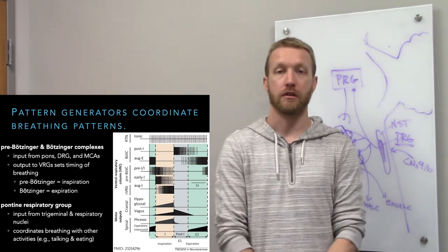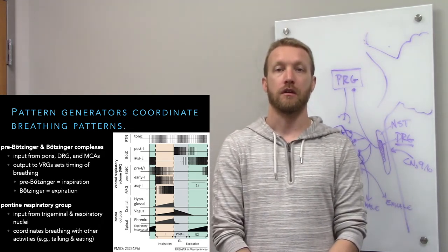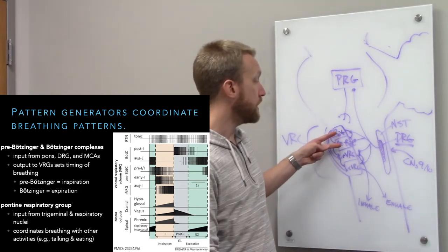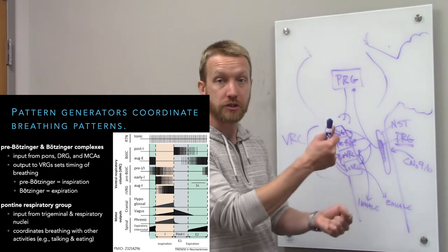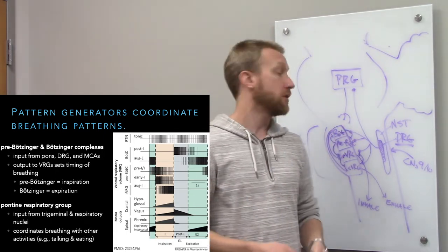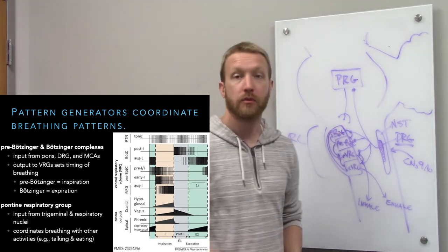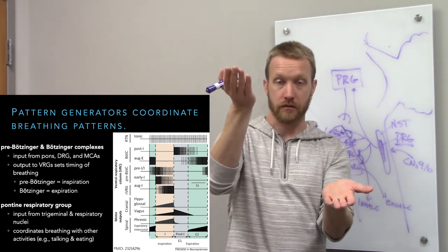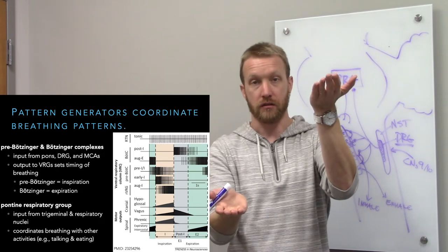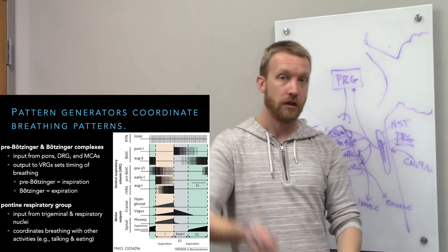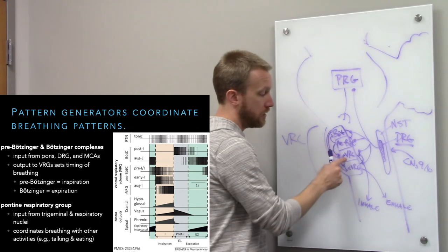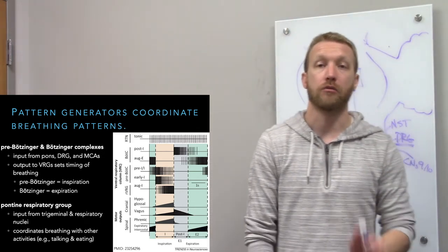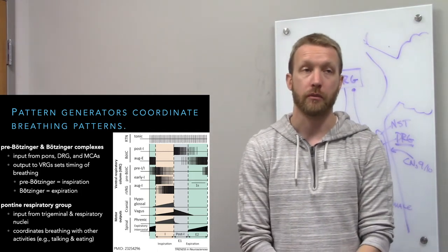Rostral ventral respiratory group handles inhalation; caudal handles exhalation. The timing of the switch is controlled by the Bötzinger and Pre-Bötzinger complexes. Whether we breathe slowly or rapidly is determined by how fast these two pacemakers switch back and forth — they inhibit one another, creating an exhale/inhale alternation that maintains a relatively stable level of carbon dioxide in the blood.